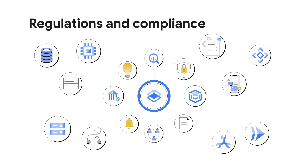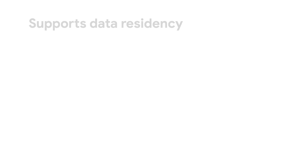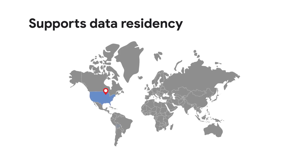VPCSC also helps address compliance requirements with industry and government regulations. By providing a way to control access to Google Cloud services, you are set up to successfully follow regulations around who and what resources can access your data. VPCSC also leverages geographic information to restrict which geographies can connect to data, thus supporting data residency goals.